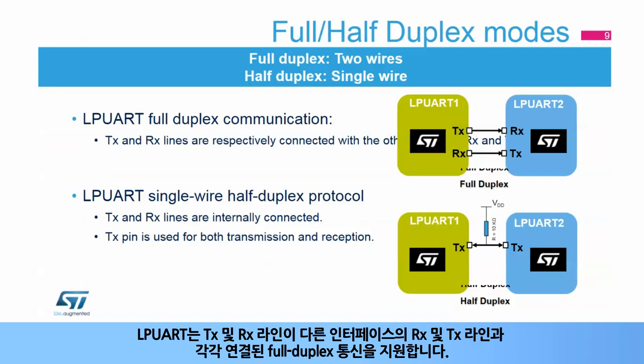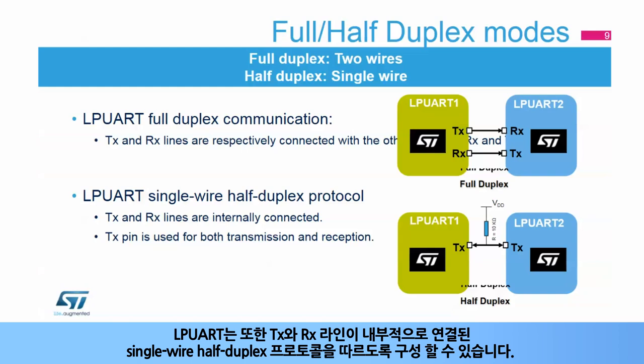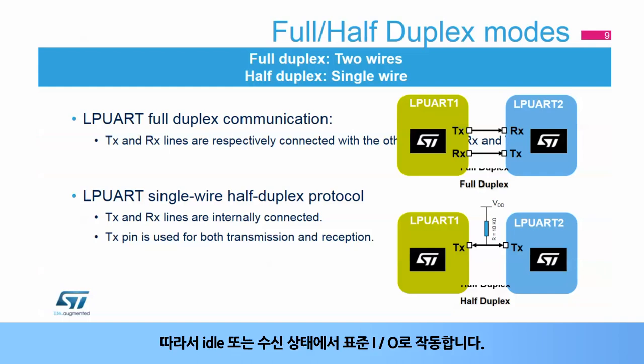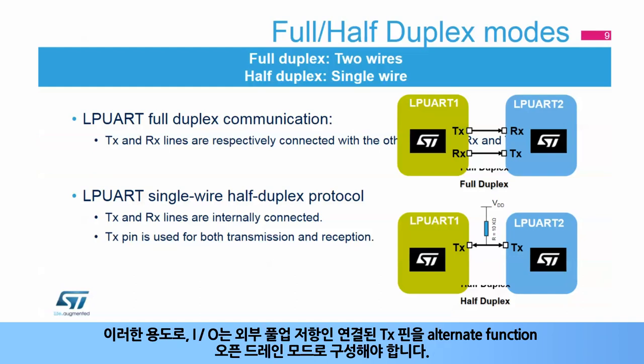The LPUART supports full-duplex communication, where the TX and RX lines are respectively connected with the other interface's RX and TX lines. The LPUART can also be configured for single-wire half-duplex protocol, where the TX and RX lines are internally connected. In this mode, only the TX pin is used for both transmission and reception. The TX pin is always released when no data is transmitted, acting as a standard I/O in idle or reception states. The I/O must be configured with the TX pin in alternate function open drain mode with an external pull-up resistor.